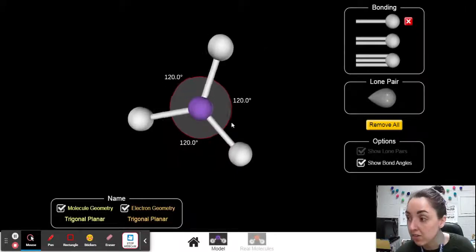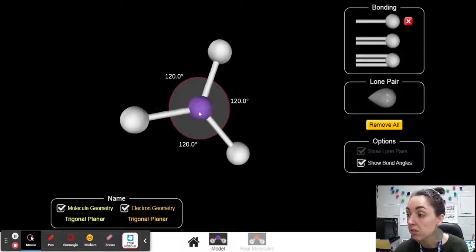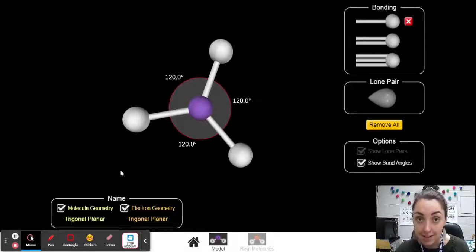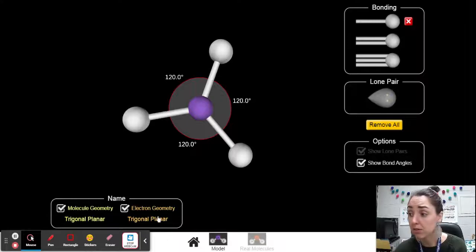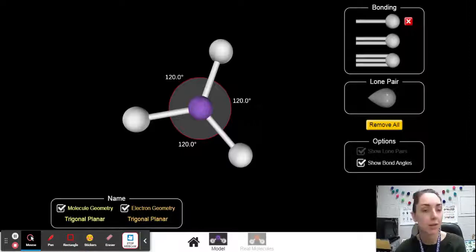So for electron geometry, let's just look at that for a second. You'll see I have three bonds here, and my bond angle is 120 degrees. This is called trigonal planar. So it's like a triangle, and it's flat, trigonal planar.